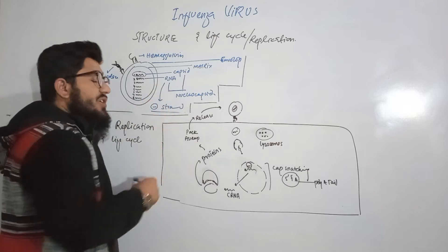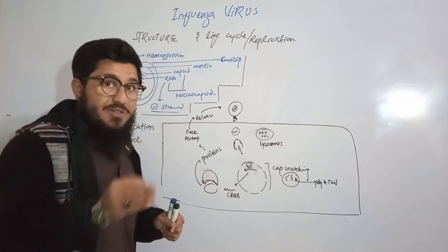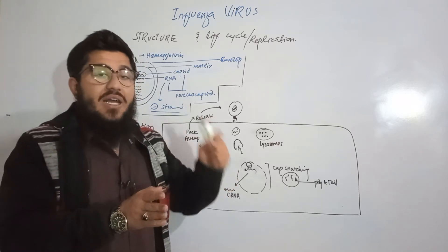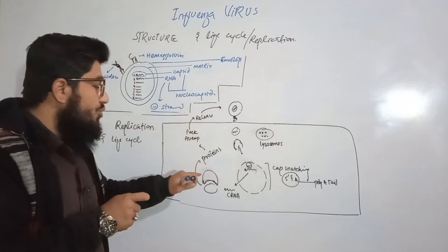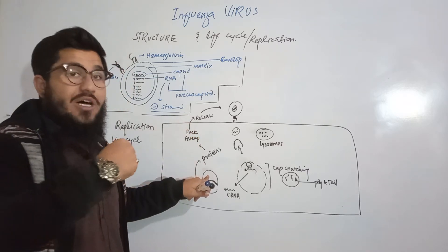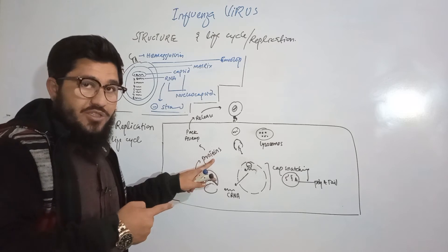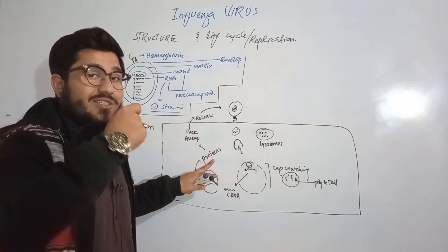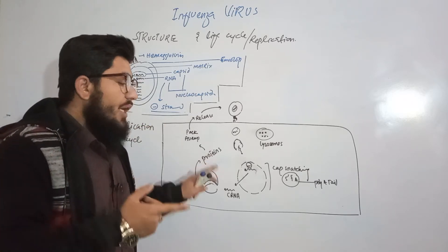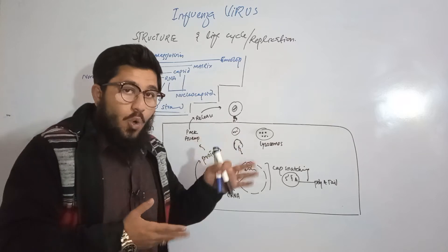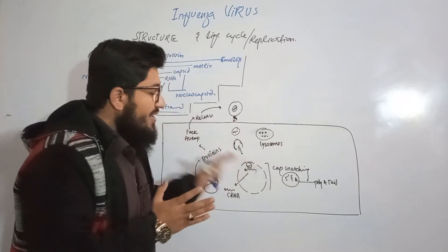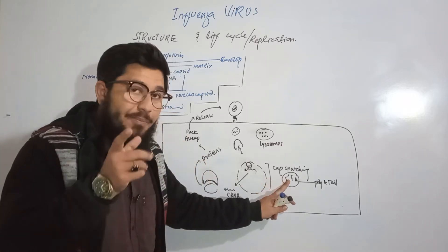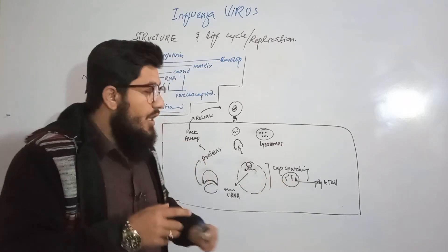Once the negative sense RNA reaches the nucleus, we can clarify what 'negative sense' means. Negative sense RNA cannot attach to ribosomes and translate to synthesize proteins — in short, negative sense RNA is not able to produce proteins on its own. So the RNA reaches the host nucleus to solve this problem.